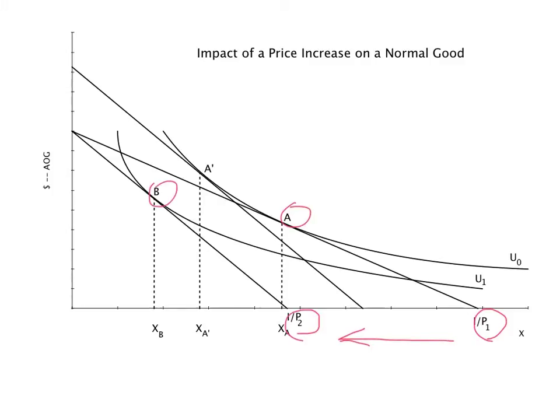The shift from A to A prime is the substitution effect and that from A prime to B is the income effect.